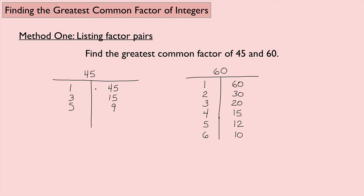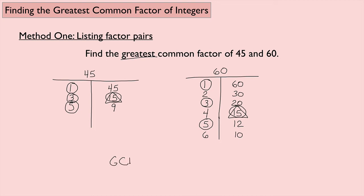Now let's find everything that's common and circle it. I have a 1 on each — that's common. The 3 is common on both. The 5 is common. And 15 is common. These are the common factors. Now look for the greatest one — the largest we see is 15. So the GCF of 45 and 60 is 15.